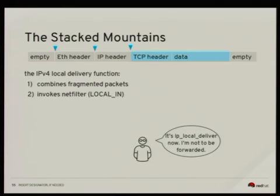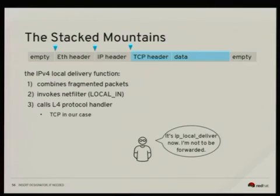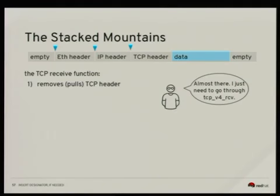After possible reassembly, we invoke netfilter again — this time the local_in chain, since we're in the local delivery function. In contrast, if the packet is being forwarded via ip_forward, a different netfilter chain would be called. After the local_in chain, we look up the L4 protocol table, find the appropriate handler based on the header, and call it. In our case, it's TCP, so we call tcp_v4_rcv.